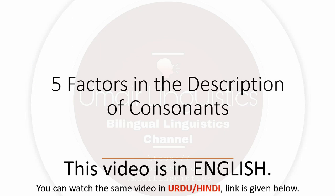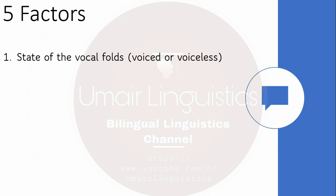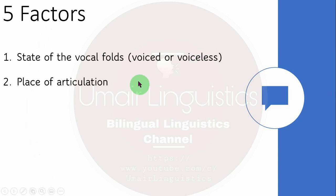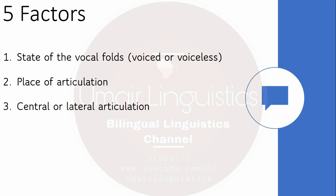There are five factors we can keep in mind when describing consonants. The first is the state of the vocal folds: when vocal folds are vibrating, a sound is voiced; when they are not vibrating, the sound is voiceless. The second is place of articulation — where in the mouth we are producing the sound — whether it is bilabial, labiodental, dental, alveolar, post-alveolar, palatal, or velar.